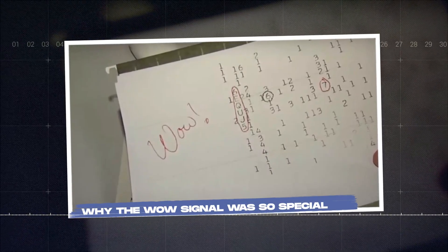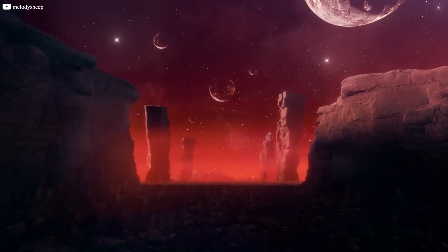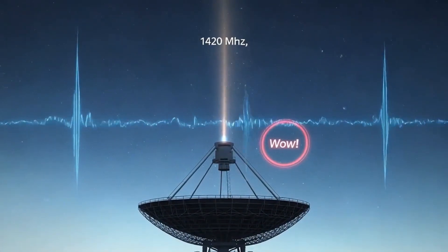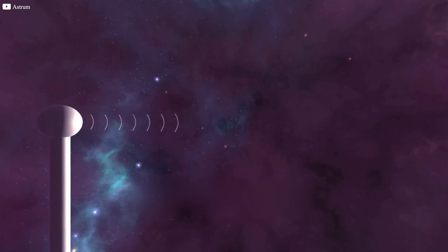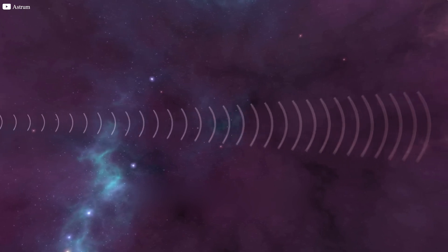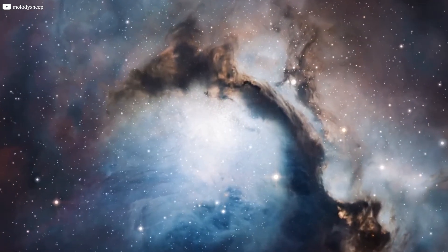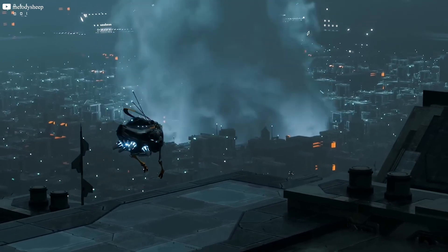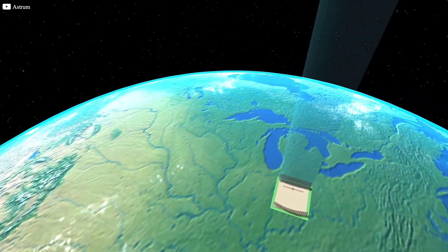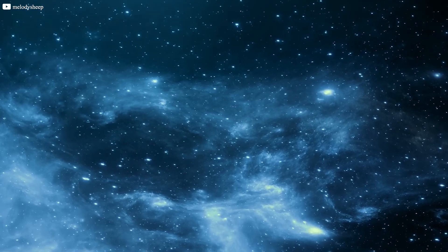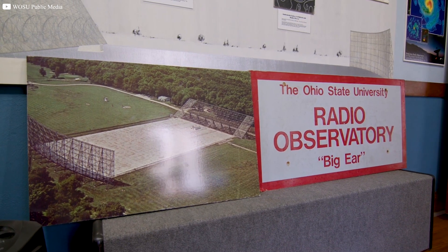Why the wow signal was so special? The wow signal was unique in several ways, making it a standout event in the search for extraterrestrial intelligence. To begin with, its frequency, 1420 megahertz, was not just any random frequency. It was the same frequency at which hydrogen, the most abundant element in the universe, naturally emits radiation. This made it the ideal universal frequency for extraterrestrials. Moreover, the signal's sharpness and narrow bandwidth set it apart from the usual cosmic noise. Unlike the broad spectrum of radiation emitted by stars or gas clouds, the wow signal was focused and clear, further hinting at a deliberate source rather than a natural one.